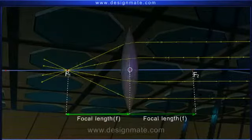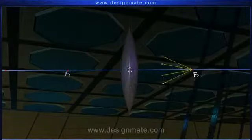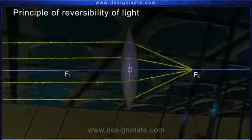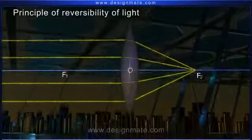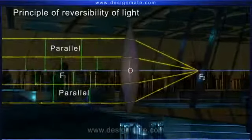Principle of reversibility of light: A ray of light passing through the focal point of the convex lens emerges on the other side of the lens parallel to its principal axis.